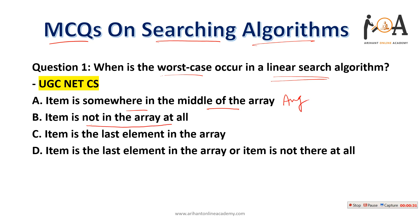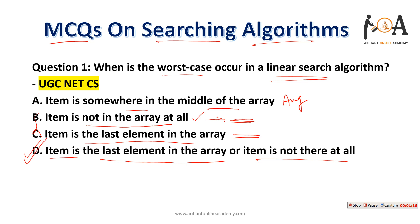Option B: item is not in the array at all — this may be a worst case. Option C: item is the last element in the array — in this case we also need to traverse the entire array. If item is not in the array or is at the last position, we must compare with all elements. Combining B and C, option D — 'item is the last element OR item is not there at all' — is the correct answer.